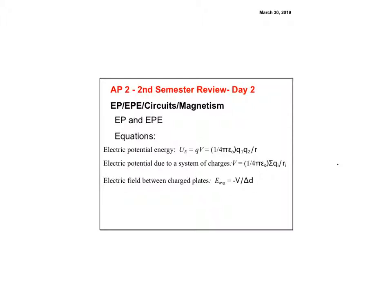You need to understand the difference between electrical potential and electrical potential energy. Electrical potential energy is the energy the particle has due to its position — just like gravitational potential energy. The V is the potential: it has potential to do something, but there's no energy until you add Q to it, giving you electrical potential energy.